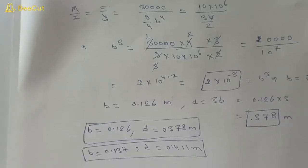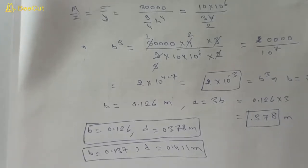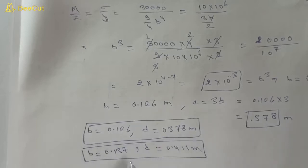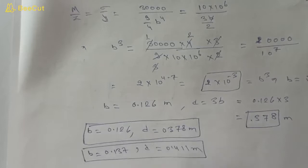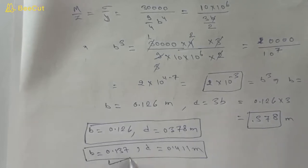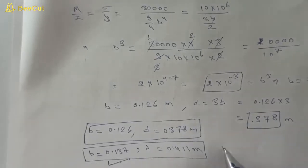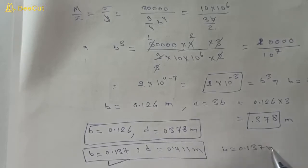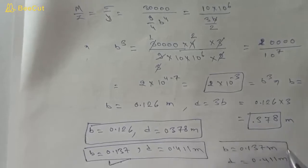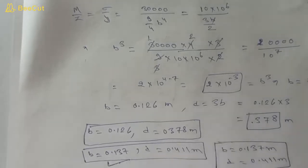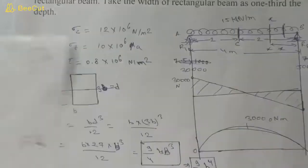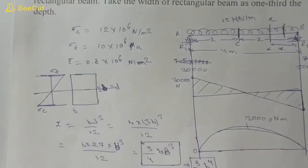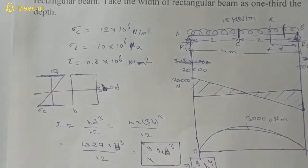We have two sets of dimensions: from bending stress criteria b = 0.126 m, d = 0.378 m; from shear stress criteria b = 0.137 m, d = 0.411 m. To design a safe beam we choose the larger dimensions, so the final answer is b = 0.137 m and d = 0.411 m. I hope you understood this question — please subscribe. Thanks for watching.